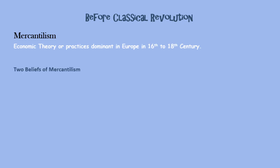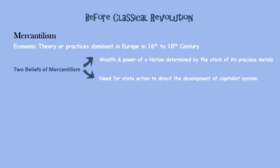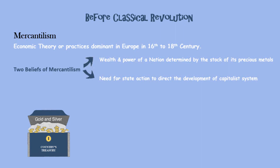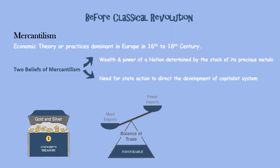There were two beliefs in mercantilism. The first one is bullionism — the belief that the wealth and power of a nation is determined by the stock of its precious metals. If a country has a huge stock of gold and silver, it is considered more prosperous compared to other nations. The second belief was the need for state action to direct the development of the capitalist system.